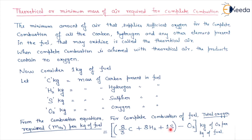Here, 1 kg of sulfur requires 1 kg of O₂, so S kg of sulfur requires 1 × S kg of oxygen. And we subtract O₂ because oxygen is already present in the fuel — that amount of oxygen will also take part in combustion and must be subtracted from the required amount. So the minimum oxygen required per kg of fuel is: (8/3)C + 8H₂ + S − O₂.